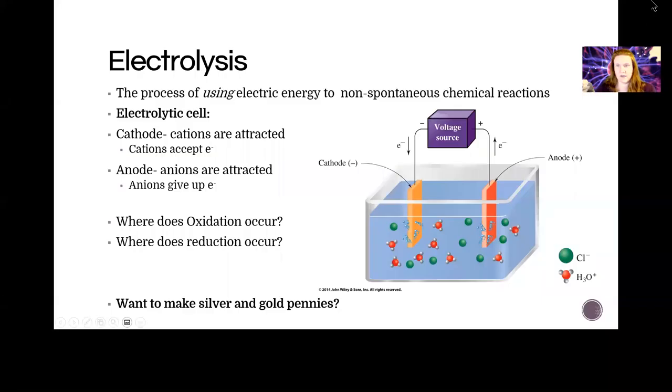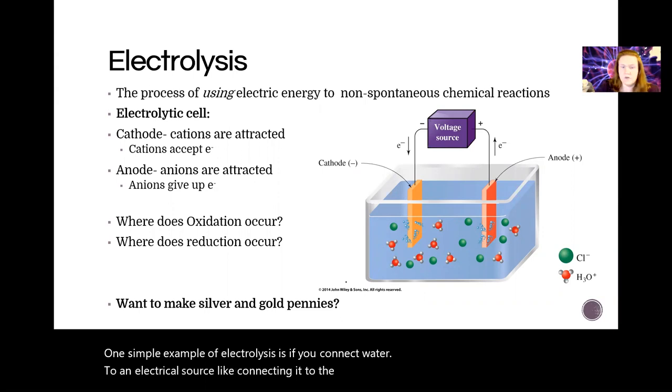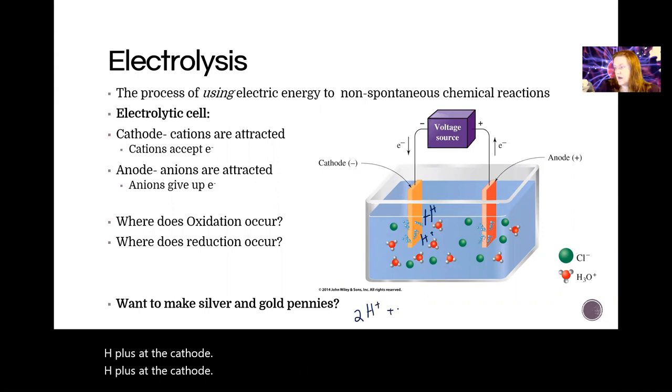So one simple example of electrolysis is if you connect water to an electrical source, like connecting it to the wall, you will take H plus at the cathode. You'll need two of them. You'll take H plus at the cathode and we're going to add two electrons and you're going to get hydrogen gas. Okay, so that's the cathode reaction.